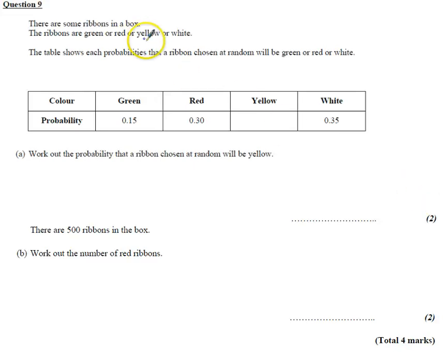Question 9 is talking about ribbons in a box. We've got a table. The ribbons are either green, red, yellow, or white. The table shows the probabilities of each being chosen. Work out the probability that a ribbon chosen at random will be yellow.